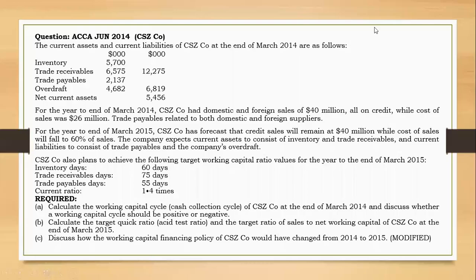Welcome again to this channel. We're going to look at how to do this question here. We need to discuss the capital financing policy of this company that would have changed from 2014 to 2015. We are told that the current assets and current liabilities are given at the end of 2014. The company had domestic and foreign sales of 14 million dollars, all on credit, while cost of sales was 36 million. Trade payables related to both domestic and foreign suppliers. Now we are given information for the year ended 2015.